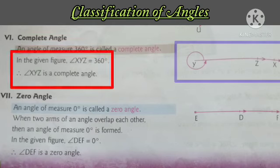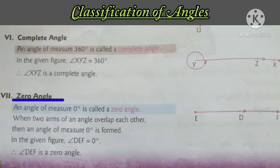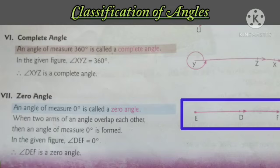Whereas next, zero angle. An angle of measure zero degrees is called a zero angle. You can see the two arms. In this one they overlap, so here you can show the measurement of zero degrees. Here the angle is DEF, zero degrees.